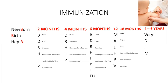And at four to six years, we're going to use our very dim. So the V is going to be varicella, D is going to be DTAP, I is going to be inactivated polio vaccine, and M will be our MMR. That's a quick overview of how to remember these vaccination schedules.